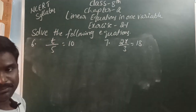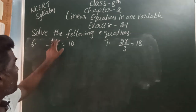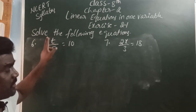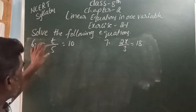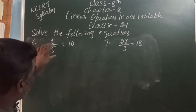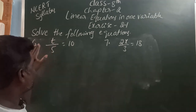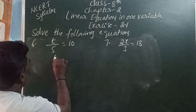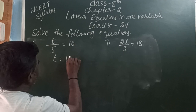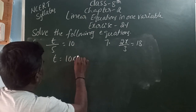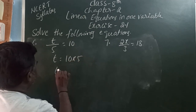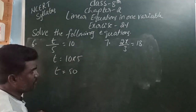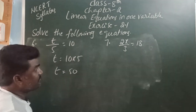t by 5 is equal to 10. Here, what is the variable? t. t is divided by constant 5. The divided constant is moving to the right side and it becomes multiple. So t is equal to 10 into 5. So t is equal to 50. The value of the variable is 50.